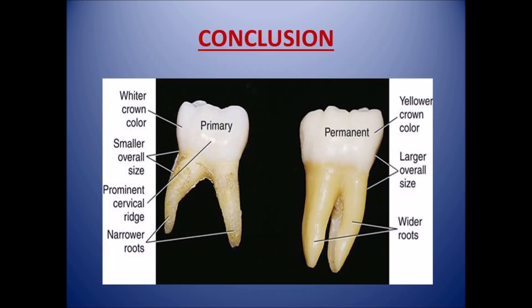To summarize, for primary teeth the crowns are wider with a smaller overall size, prominent cervical ridge, and narrower roots. For permanent teeth, they are yellowish, with a larger overall size and wider roots.